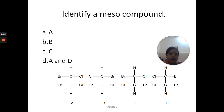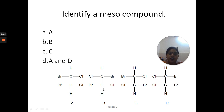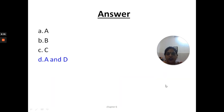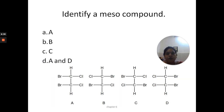The next question: identify a meso compound from structures A, B, C, and D. Looking at figure A, if you draw a mirror in between, the upper half and the lower half are mirror images of each other. In D, similarly, drawing a mirror in between shows the upper half is the mirror image of the lower half. In B and C this is not the case. So A and D are the correct answers — A and D are meso compounds.